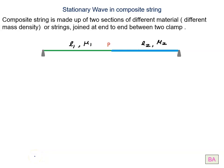Stationary wave in a composite string. Composite string is made up of two sections of different material or different mass density, joined end to end between two clamps.